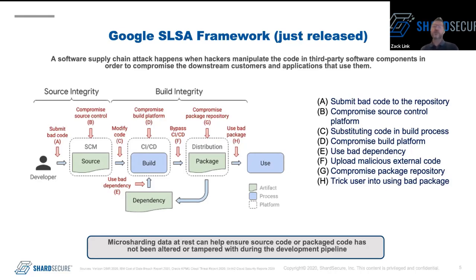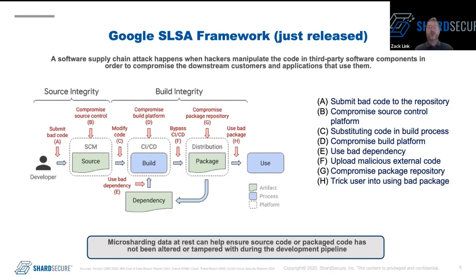The big question — and what we're going to show you today — is how micro-sharding your data can help protect your dev pipeline. Micro-sharding can help protect your source code, your object code, and any software packages while at rest. It also helps ensure they haven't been tampered with, ensuring that your data at rest is both secure and private. For the last 30 years, we've been using one security control for data at rest, and that's encryption.